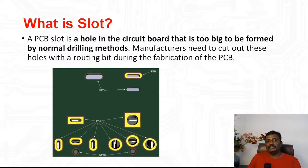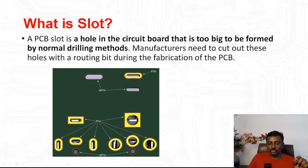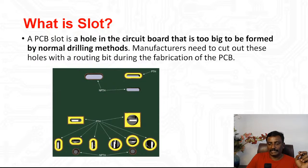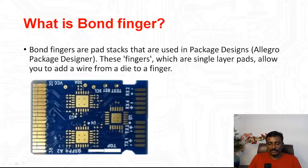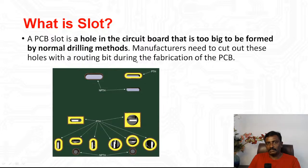Plated slots have copper and provide connectivity. An example where slots are needed is a DC power jack — you cannot use a regular drill for mounting a DC power jack connector on a PCB; you need a slot. I showed this example using the 8051 board design where the DC power jack uses a slot in the top layer routing.